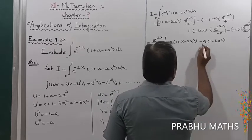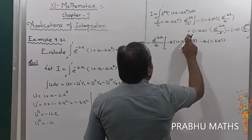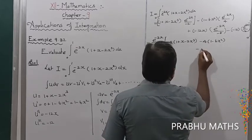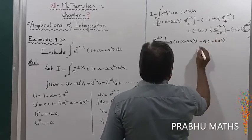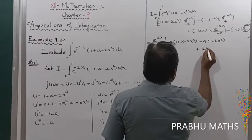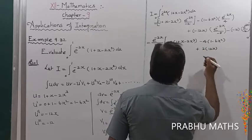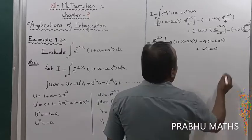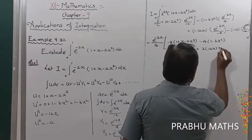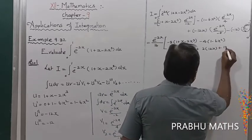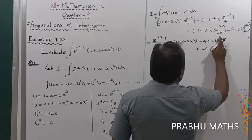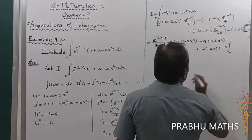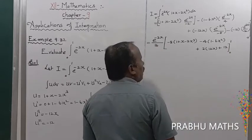The third term: common value 8, remaining value -2, so minus into minus gives plus. Next one is 2x. The remaining value is 12, giving 12x, all with limits 0 to 1.